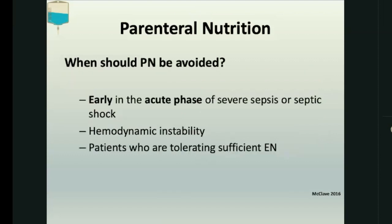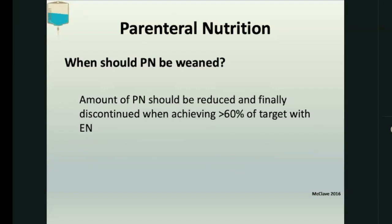When should we not give PN? Early in the acute phase of severe sepsis or septic shock, in hemodynamic instability, and in patients who are able to tolerate sufficient enteral nutrition — PN should not be given. PN is not a quick fix to rapidly optimize a patient. PN should be reduced and stopped when the patient is able to tolerate at least 60% of their target enteral nutrition.